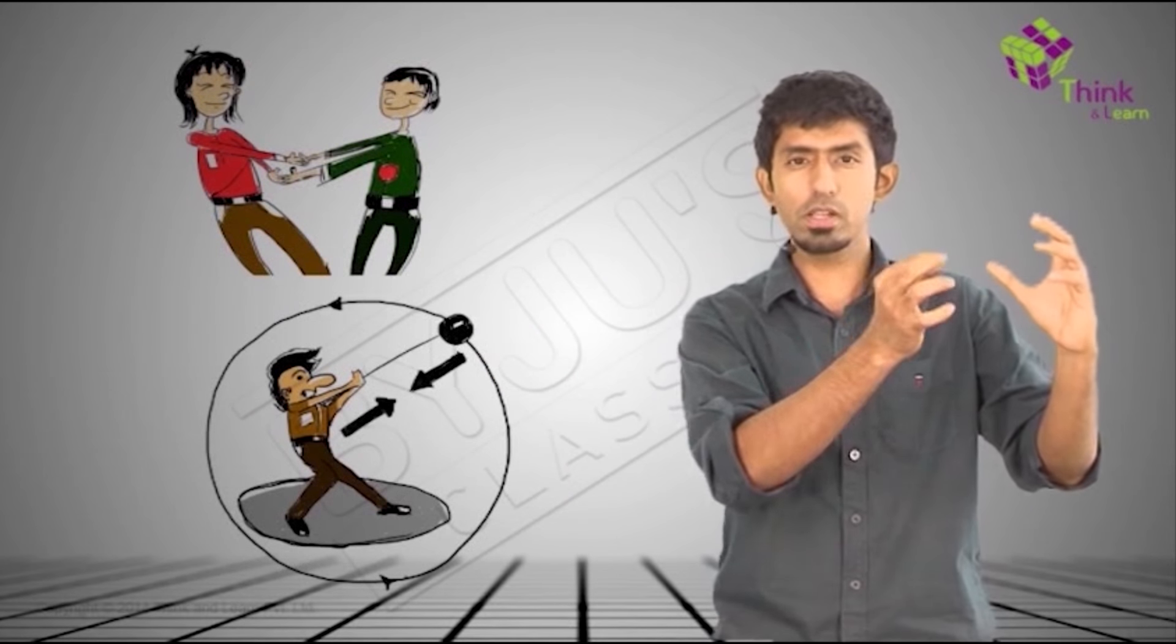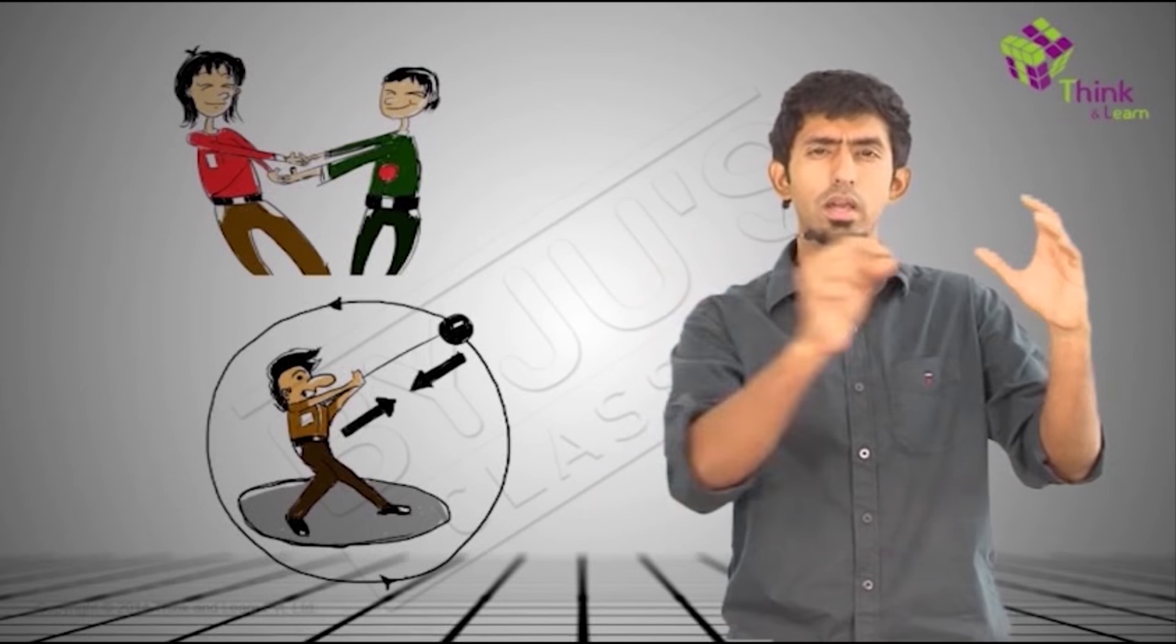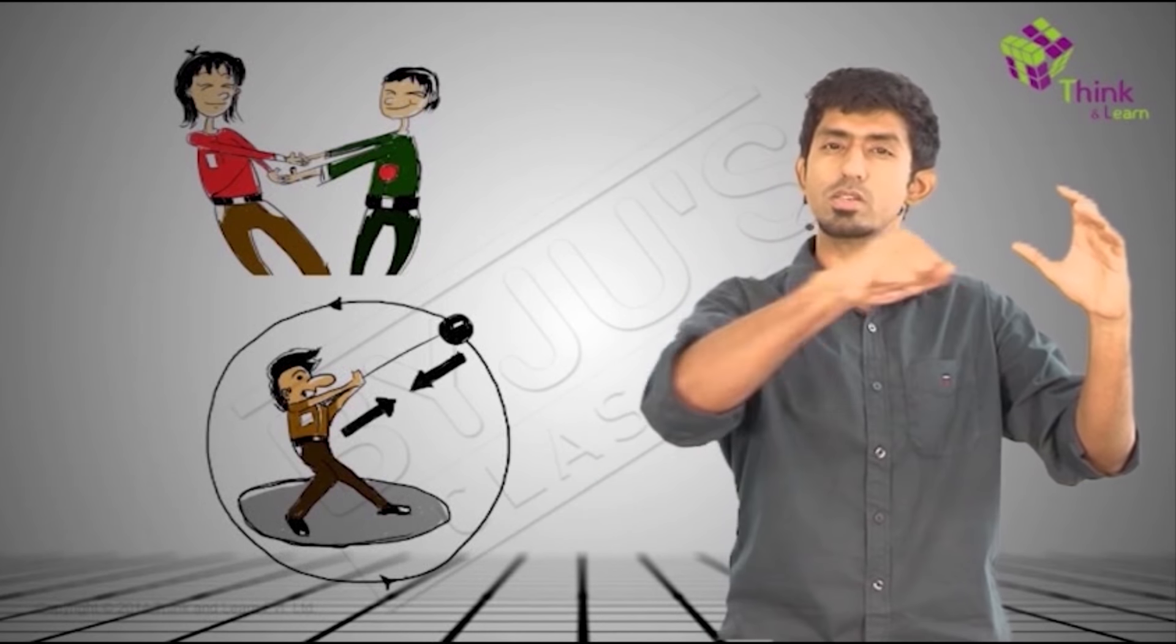So even if you take the ball in a string example, at every point, the ball feels a pull from the string inwards. If that is true, what happens to the ball? It goes in a circle. Right? In this case, who's pulling it inwards? Your hand or in one sense, the tension in the string. The tension is pulling it inwards.